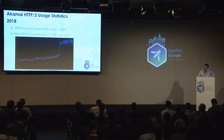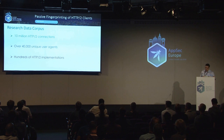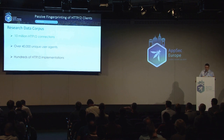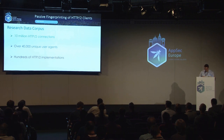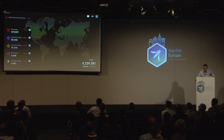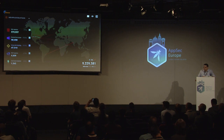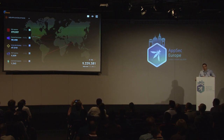Today we're seeing about 120 million new HTTP 2 connections on a daily basis. The data corpus for this research was 10 million HTTP 2 connections, which included about 40,000 different user agents, covering about hundreds of HTTP 2 implementations — major browsers or all kinds of automation libraries. From a security standpoint, one of the things we tried to monitor at Akamai is web attacks over the traffic, and surprisingly, even with quite a lot of H2 traffic, there aren't that many web attacks.